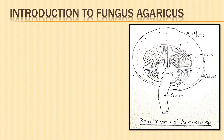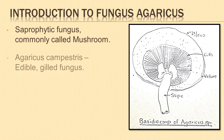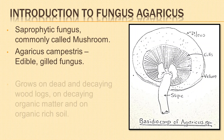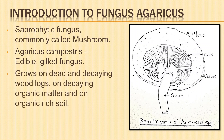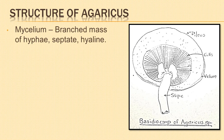Agaricus, commonly called mushroom, is a saprophytic fungus. Agaricus campestris is an edible gill fungus. It grows during the rainy season on dead and decaying wood logs, decaying organic matter, and on organic-rich soil. It is cosmopolitan in distribution.